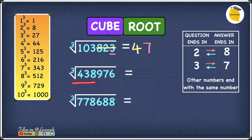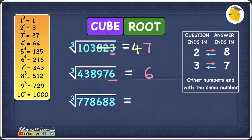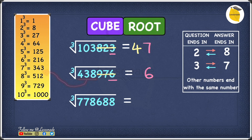Let's move to the next one: cube root of 438976. The last digit is 6, and 6 is in the category where other numbers end with the same number, so our answer will also end with 6. Cross out the last three digits — 9, 7, 6 — and we're left with 438. The 438 fits between 343 and 512, between 7 cubed and 8 cubed. Since 7 cubed is smaller, our answer is 76.